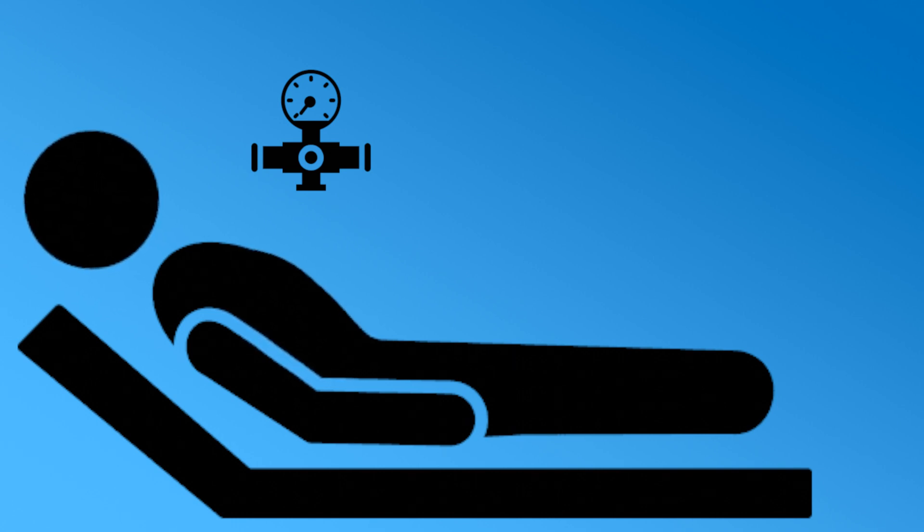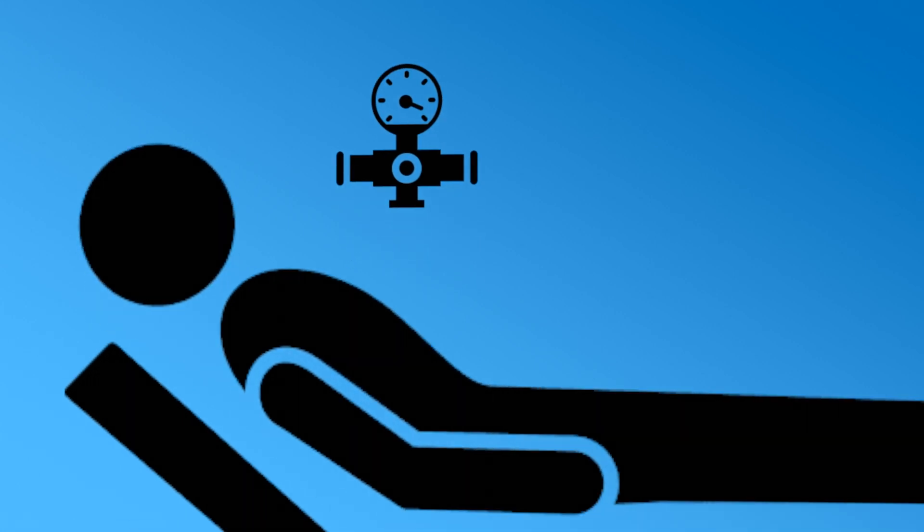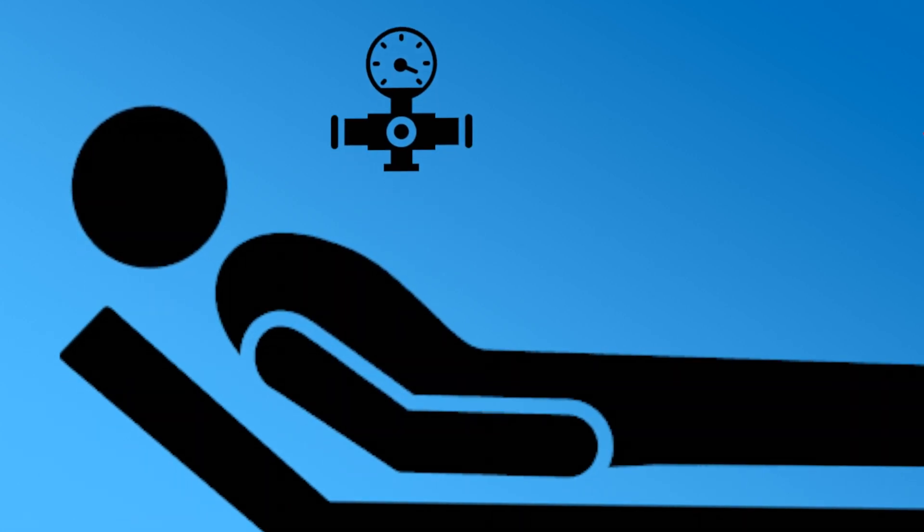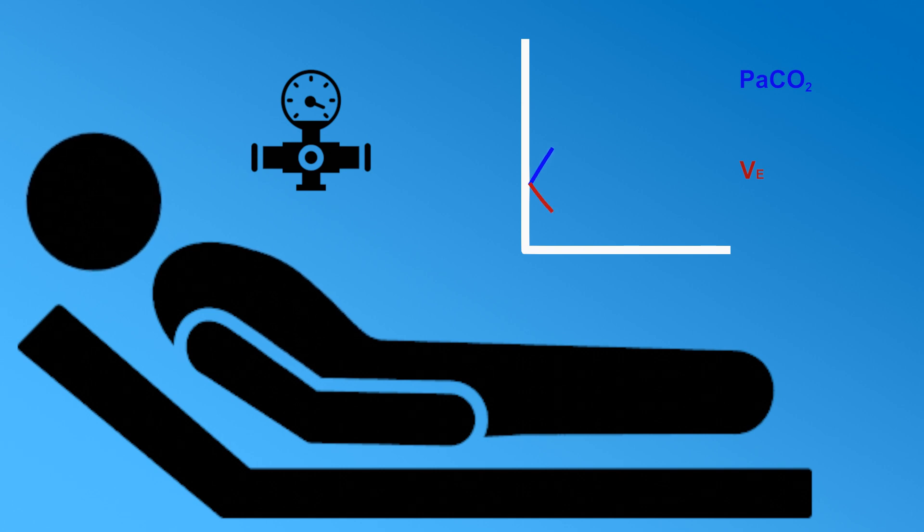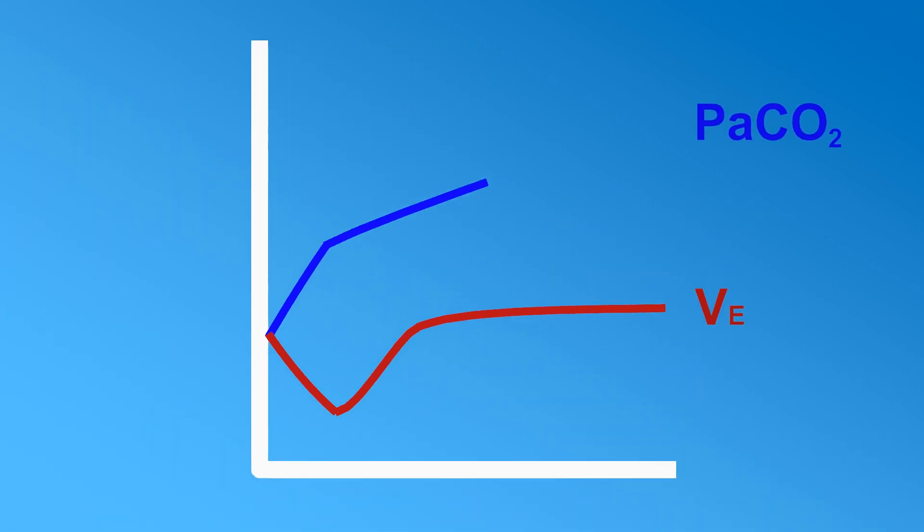Studies show that when we give these patients oxygen their breathing slows down at first, but this slowdown only lasts for a few minutes and then their breathing returns to normal. What's interesting is that even though they start breathing normally again, their carbon dioxide levels keep rising. So what's really happening?